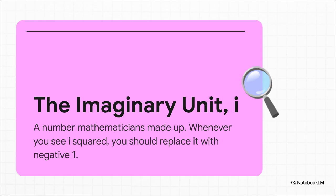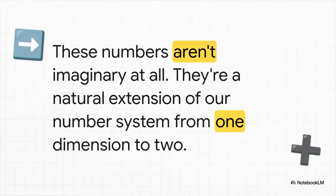It unlocked a whole new kind of number, called complex numbers, which have a real part and an imaginary part. But here's the thing you have to get. They're not really imaginary. That's kind of a terrible name for them. It's much better to think of them as a way to expand our number system from a single line into a two-dimensional plane. The real numbers go left and right, and the imaginary numbers go up and down. Suddenly, math had a whole new dimension to play in.